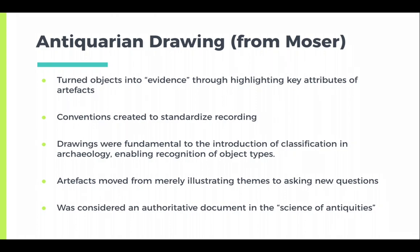Steph states that these drawings turned objects into evidence by highlighting key attributes of the artifacts. Archaeologists were interested in how rims changed, how handles changed, and how the shapes of artifacts might imply some of their use. These conventions were created to standardize recording, and the drawings were fundamental to introducing classification in archaeology — enabling the recognition of object types, which led to forming culture groups from artifact types and seriation. Artifacts moved from merely illustrating themes to asking new questions.